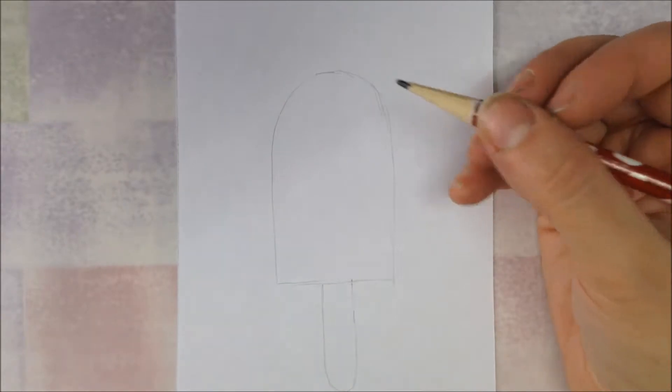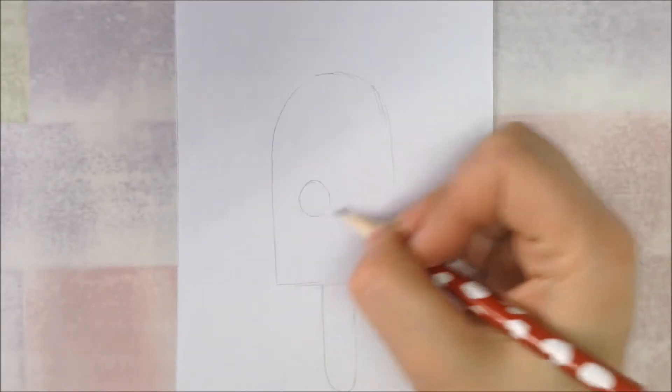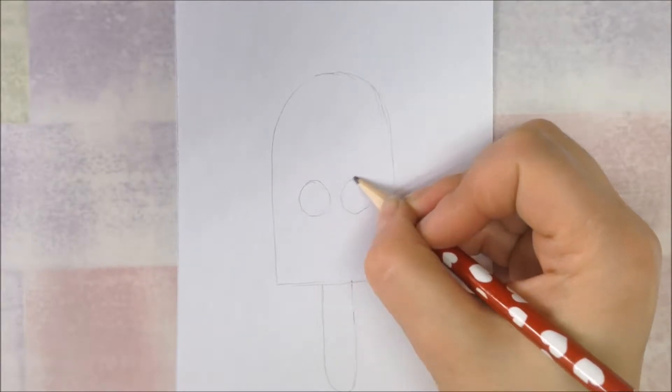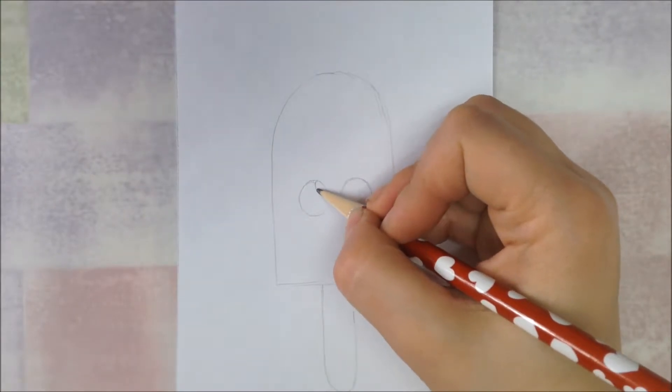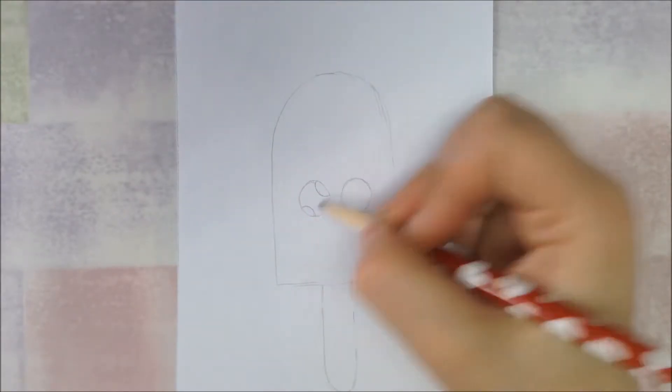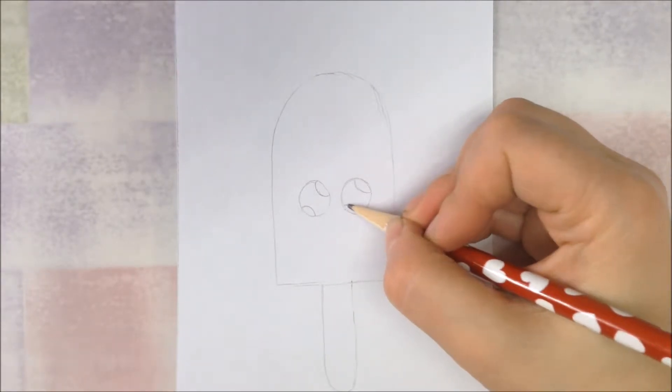We're going to draw two eyes for our popsicle in the middle. The eyes are circles about in the middle of the popsicle, and then we're going to draw two half circles on each eye. The top one's a little bit bigger and the bottom one's a little bit smaller. This is going to be the reflections for our eyes where the light would reflect.